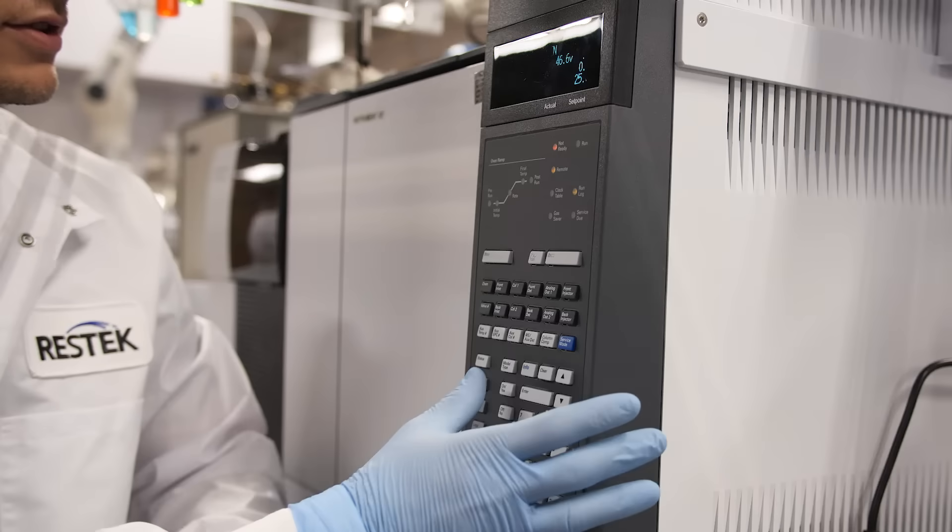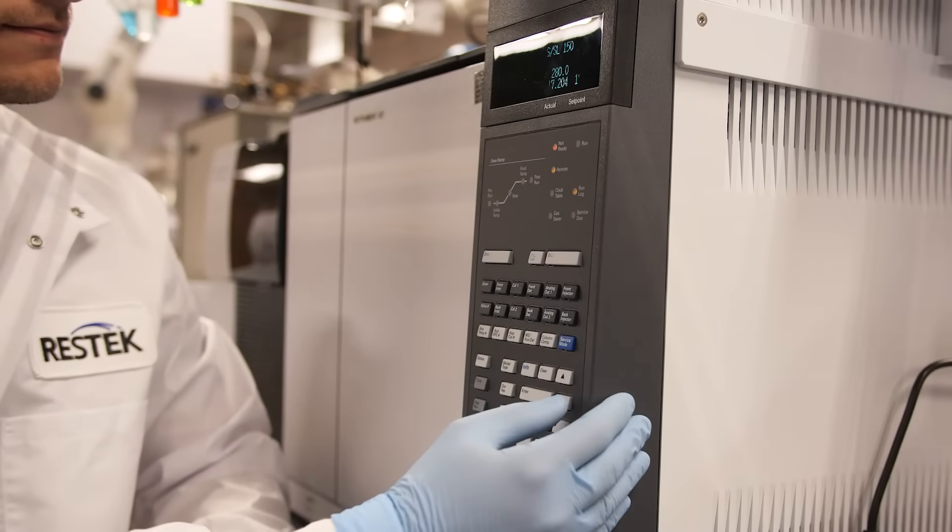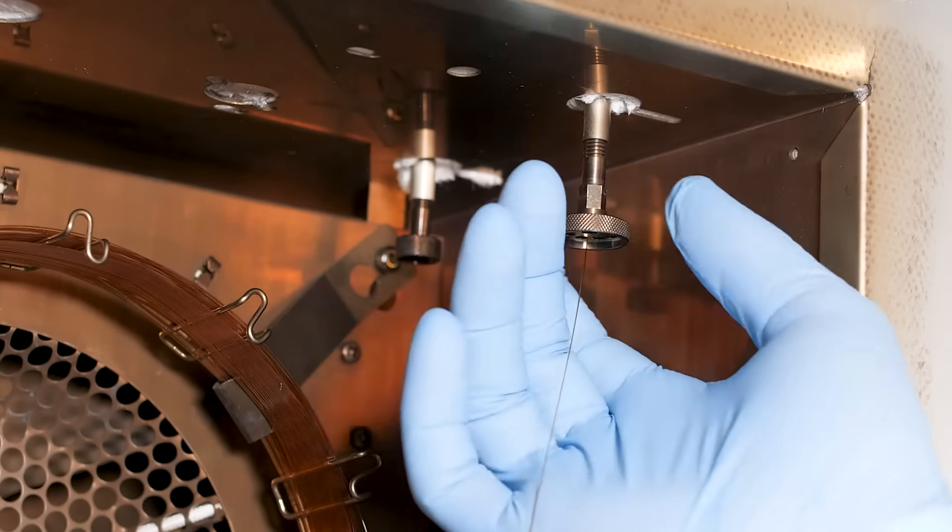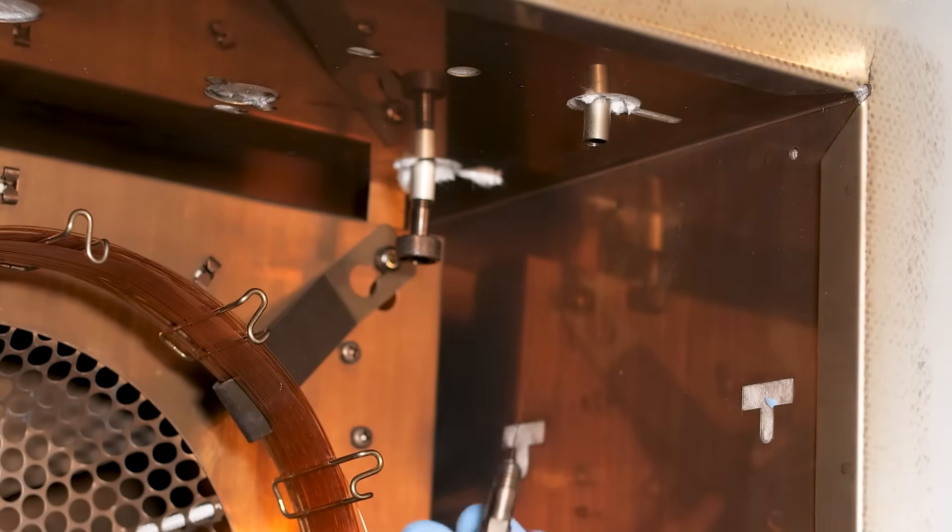To swap out these parts, first cool the GC, turn off the instrument flow, remove the column from the detector, and cool the FID. Be sure to also turn off all FID gas flows as well.